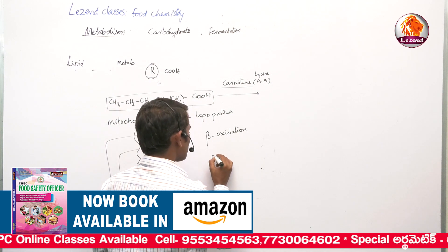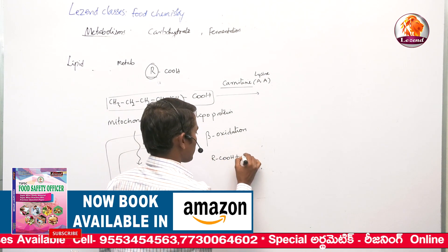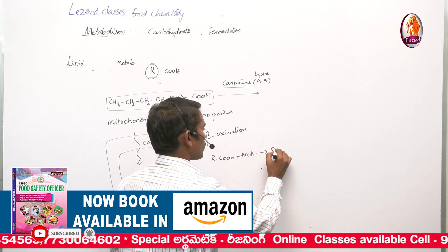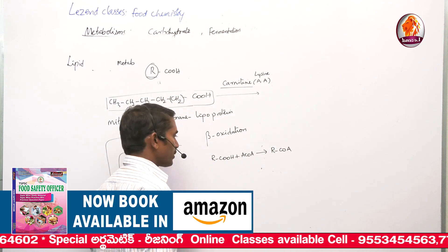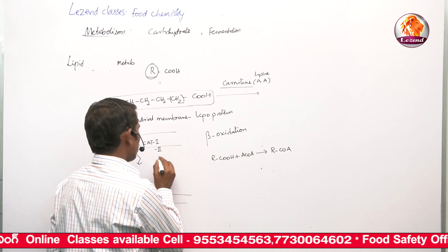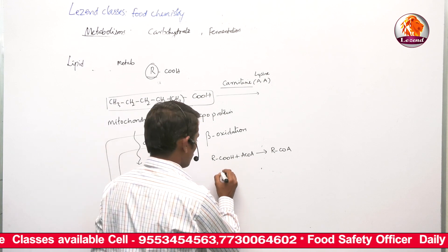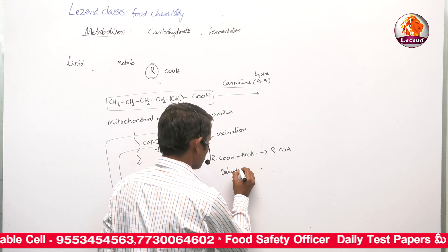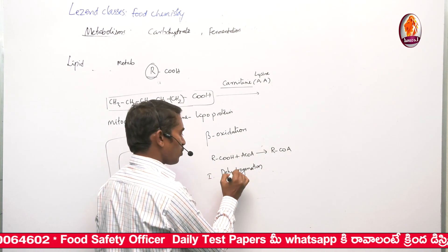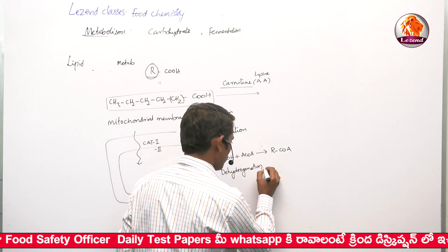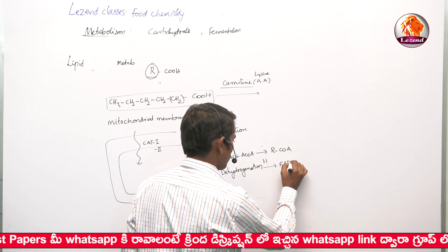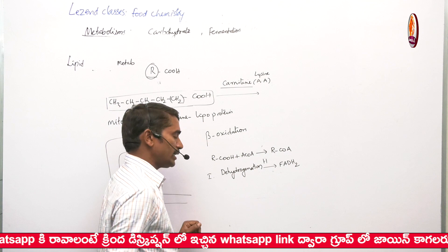Prior to beta-oxidation, a fatty acid molecule undergoes acylation — it accepts a CoA molecule and is said to be acylated (for example, palmitoyl-CoA). This acylated fatty acid then undergoes dehydrogenation — removal of hydrogens. In the first step, upon dehydrogenation, the liberated hydrogens are accepted by the FAD molecule. Therefore FAD is reduced to FADH2 — it is an electron acceptor.